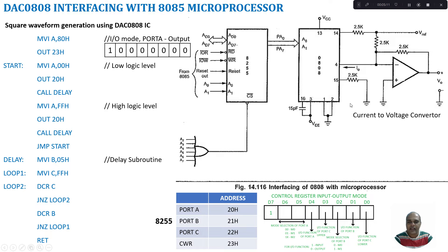Now let us see another way of interfacing the 8085 microprocessor with DAC 0808, using the 8255 IC, which is a programmable peripheral interface. Data lines AD0 to AD7 from the microprocessor go to AD0 to AD7 of the 8255. The read and write signals are controlled by IOR-bar and IOW-bar in IO-mapped mode, or MR-bar and MW-bar in memory-mapped mode. The reset signal also comes from the microprocessor.